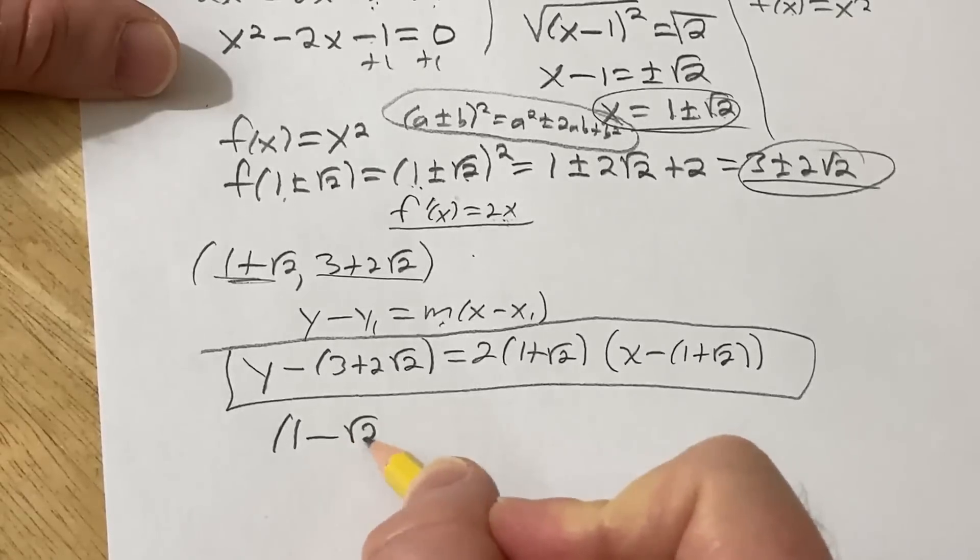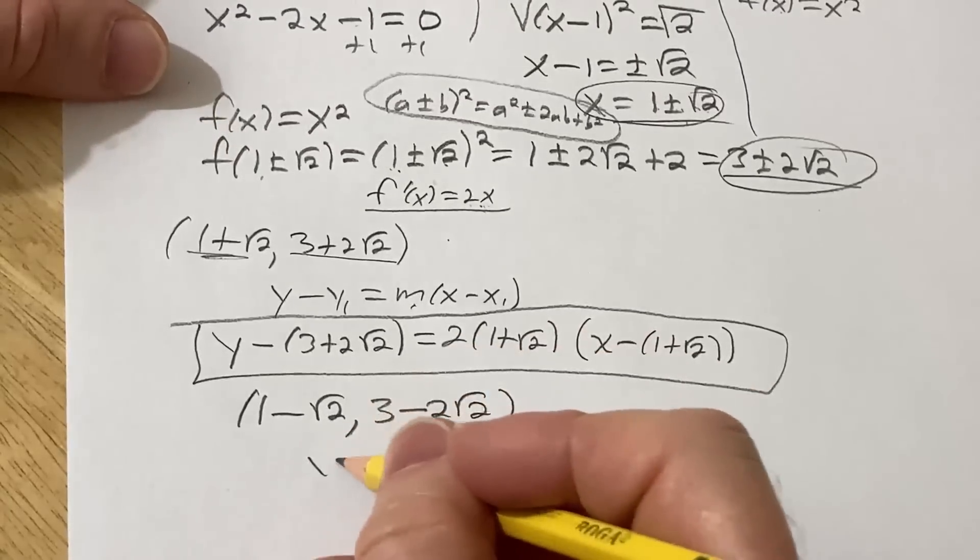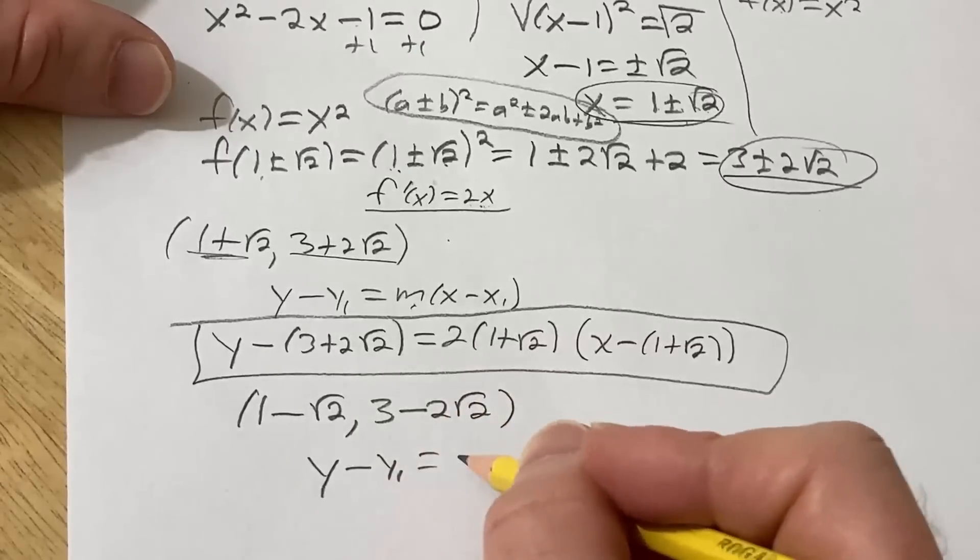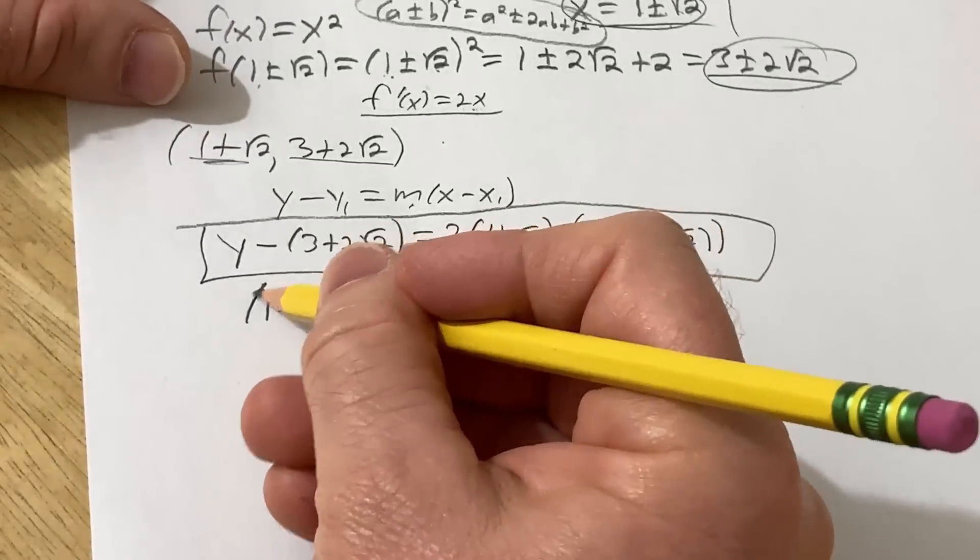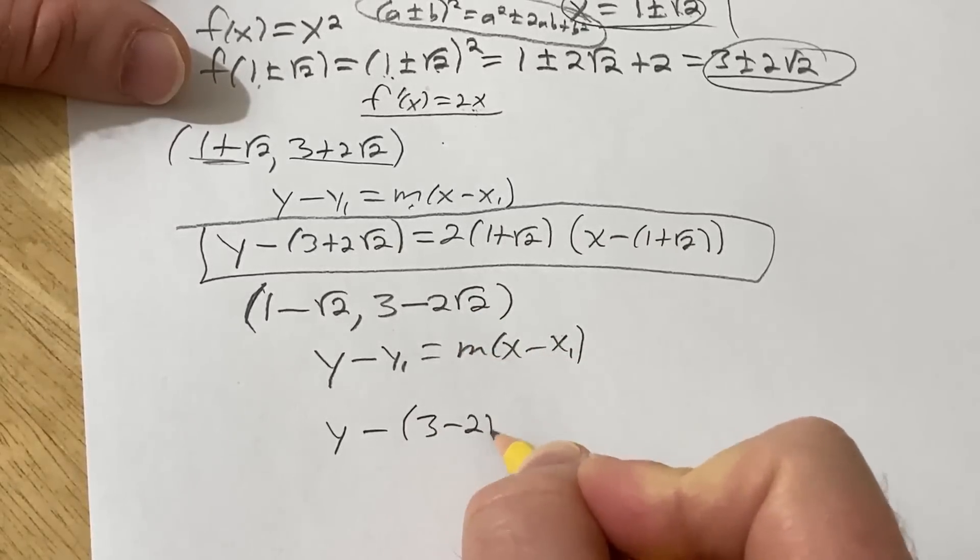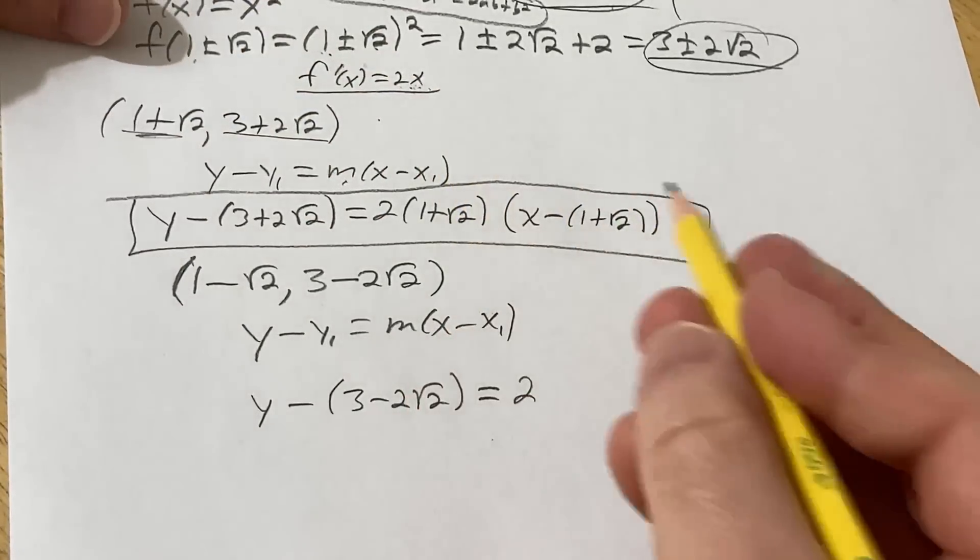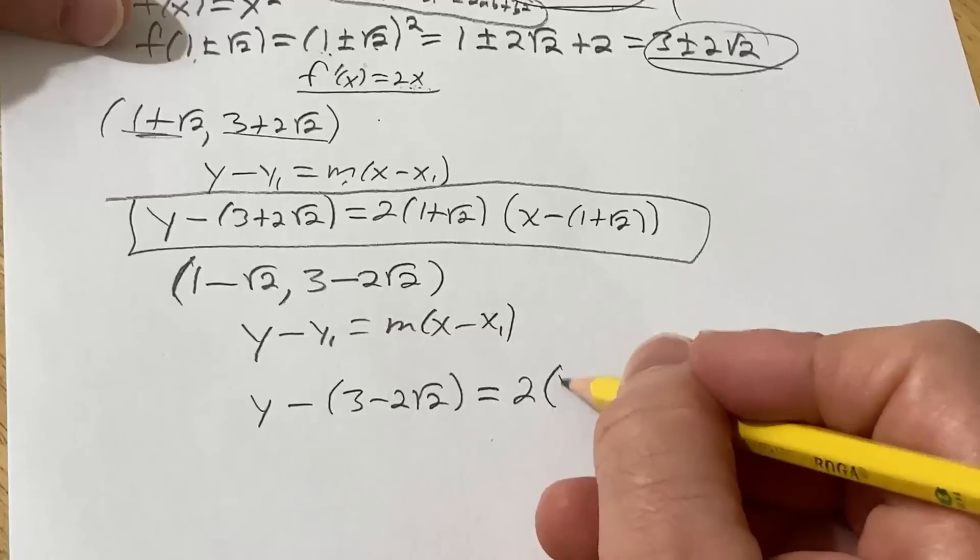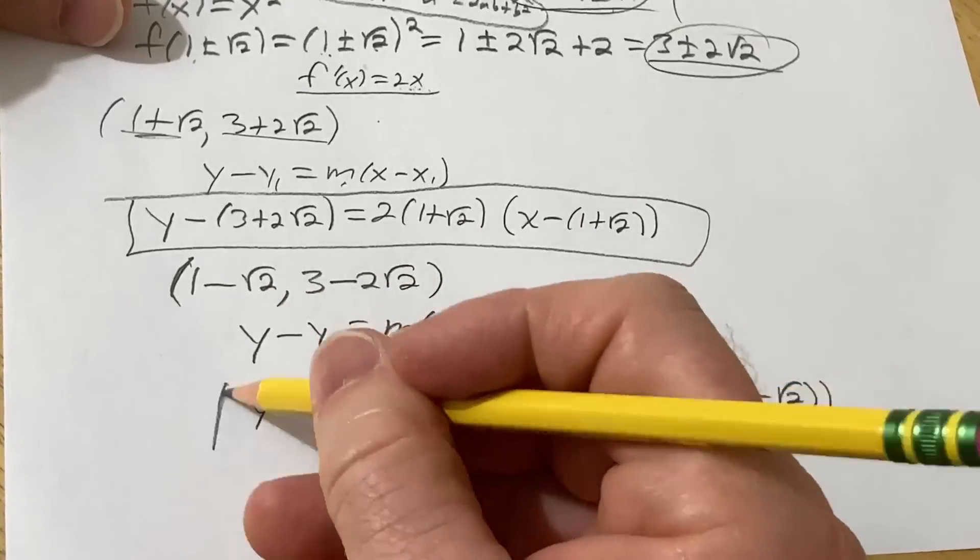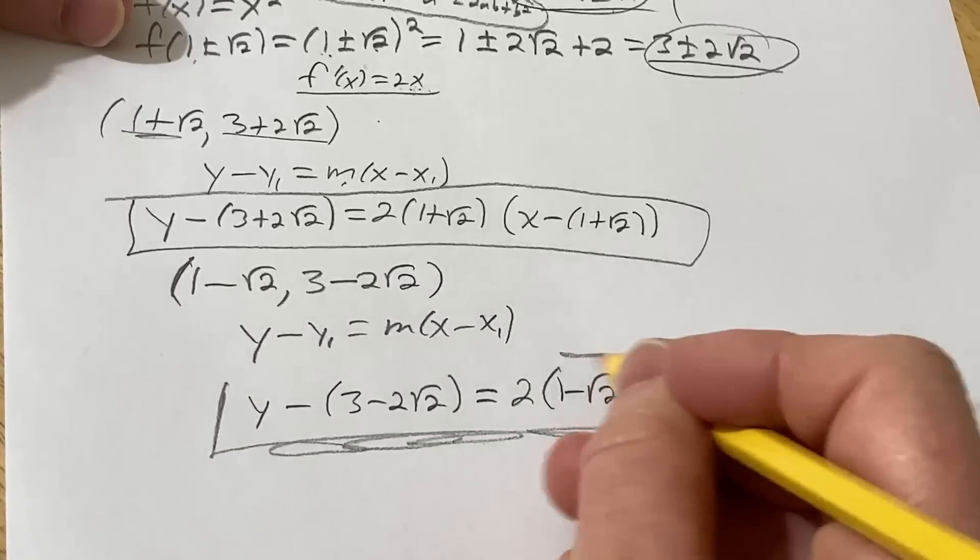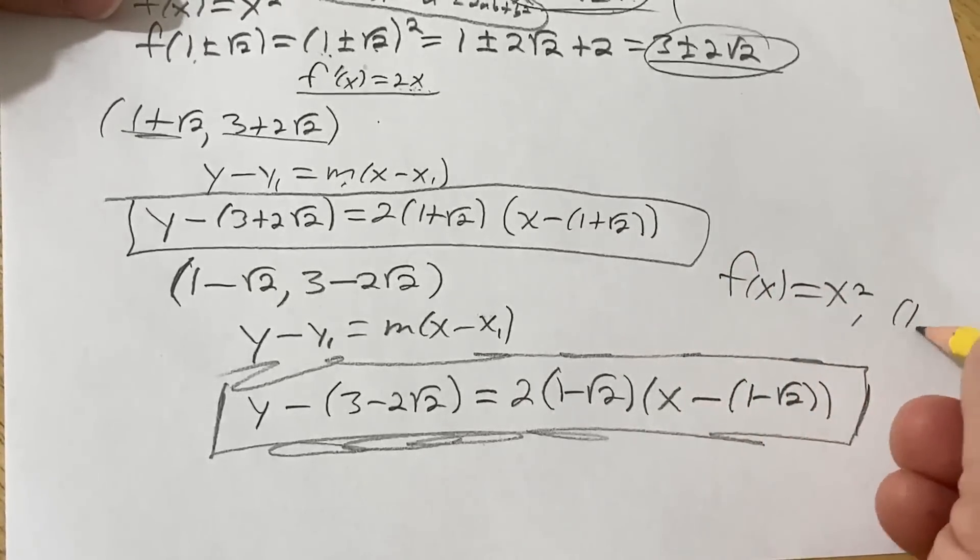The other tangent line is going to be at the other point. (1 - √2, 3 - 2√2), right? There's your x, there's your y. Same formula, y minus, and it's y₁, so y₁. And then m(x - x₁). So this is y minus. So y₁ is here. So parentheses, 3 - 2√2 equals m. And again, for m, you just plug in the x into the slope. So it'll be 2(1 - √2). And then x - (1 - √2). And those should be the tangent lines to the graph of the function f(x) = x² that pass through the point (1, -1).